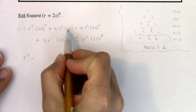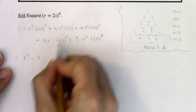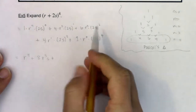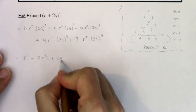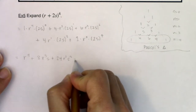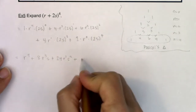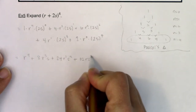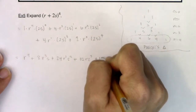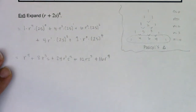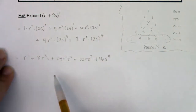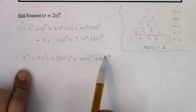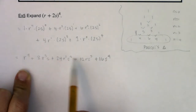Plus: 2s to the first is 2s, so four times two is eight, giving 8r³s. Plus: two squared is four, four times six is 24, giving 24r²s². Plus: two cubed is eight, eight times four is 32, giving 32rs³. Two to the fourth is 16, giving 16s to the fourth. Checking: powers of r descend — four, three, two, one, zero. Powers of s ascend — zero, one, two, three, four.